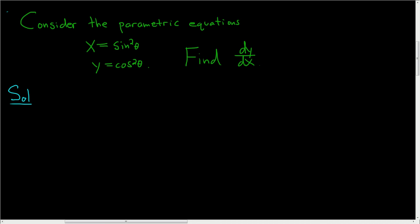We're given some parametric equations and we have to find dy/dx. So first recall the formula for dy/dx: dy/dx is equal to dy/dθ divided by dx/dθ. So all we have to do is find dy/dθ and dx/dθ and plug them into the formula.